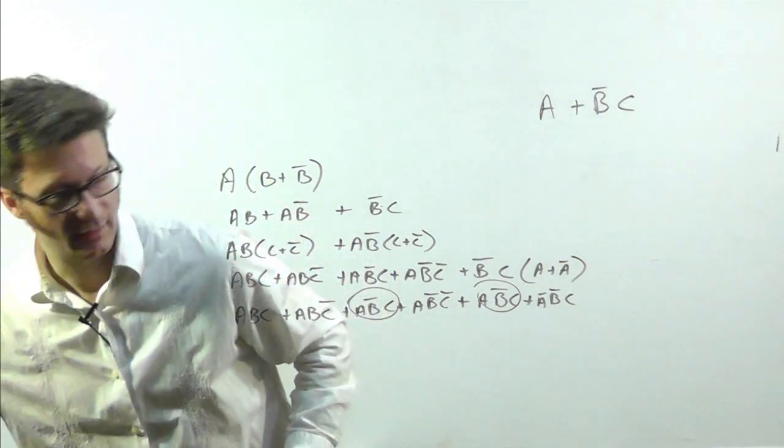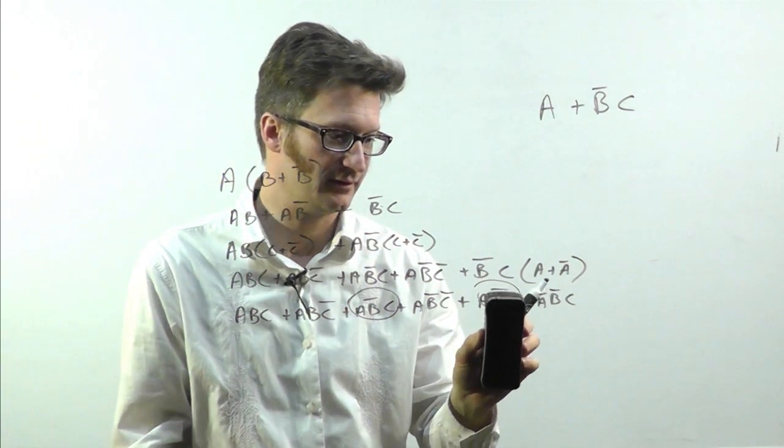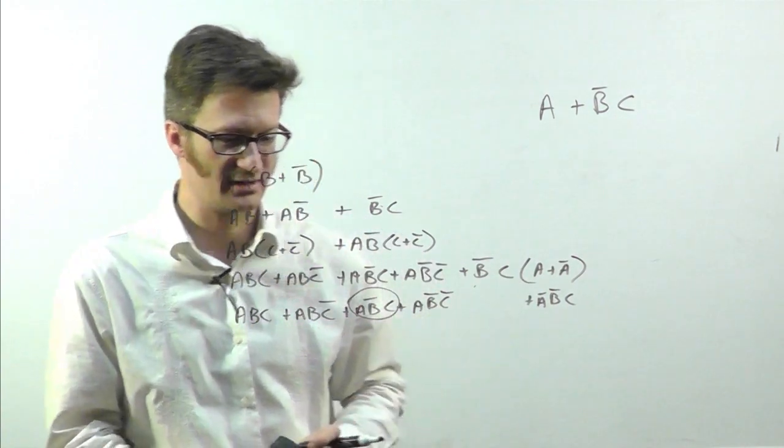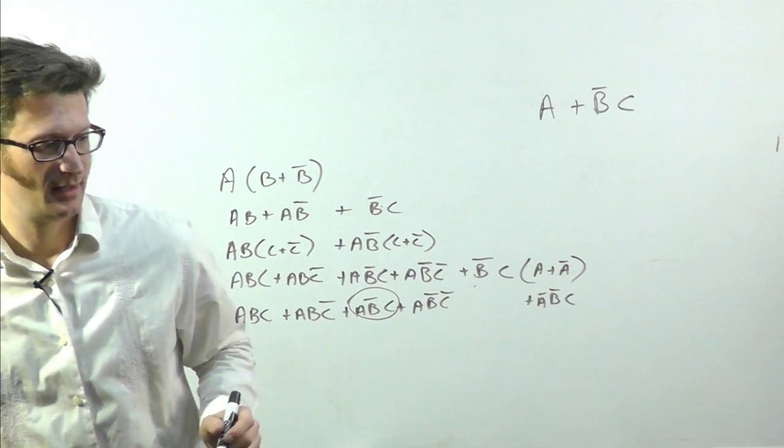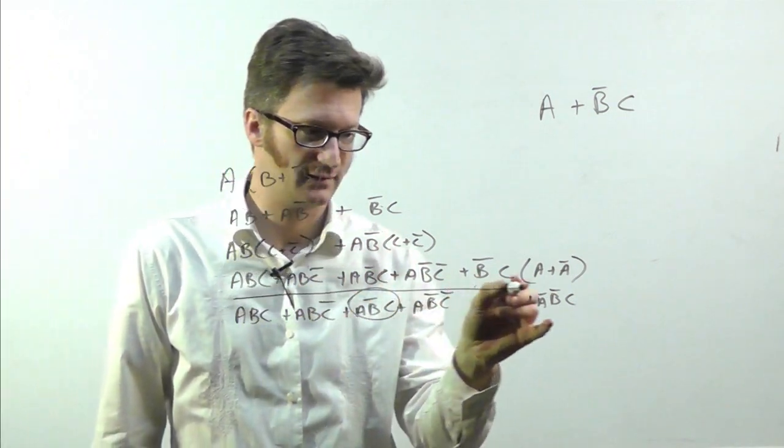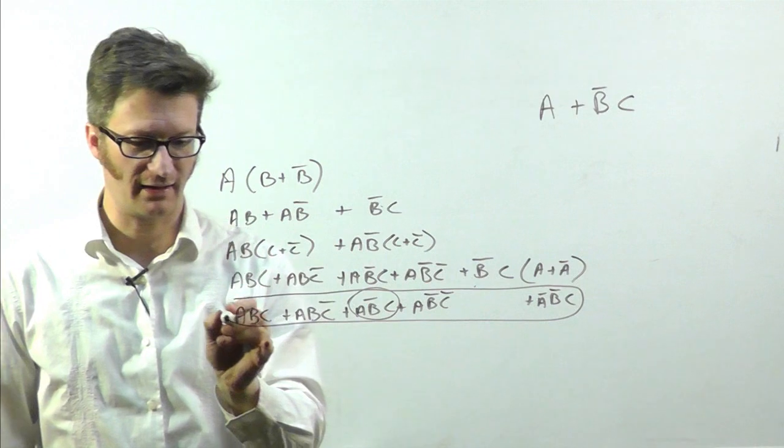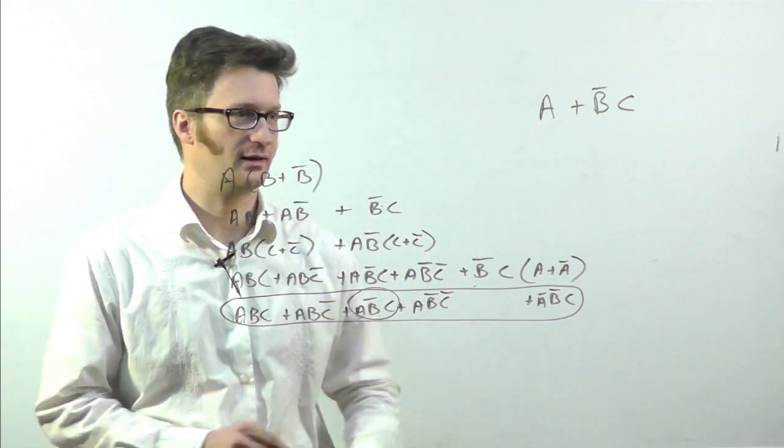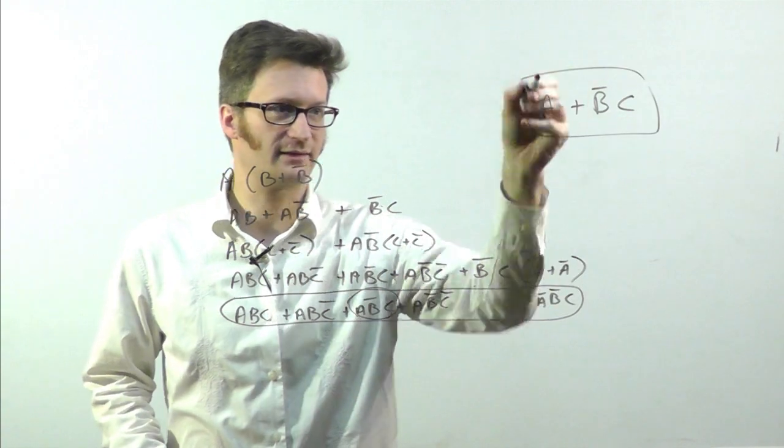So the end result here is you don't need two of them. So I'll just get rid of one of them. And so now this is an expression that every term has all three variables and is equivalent to this.